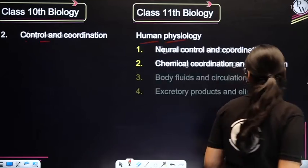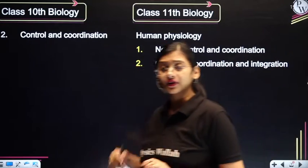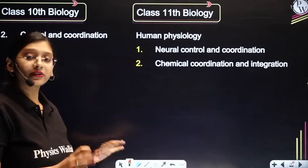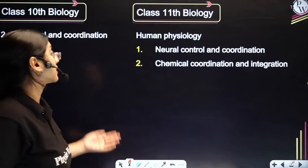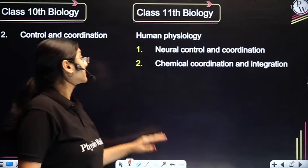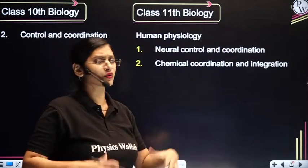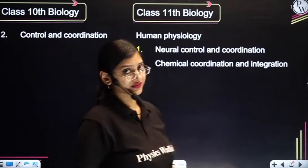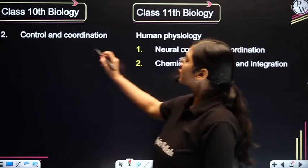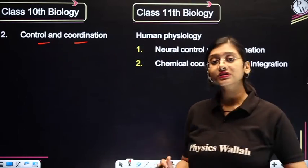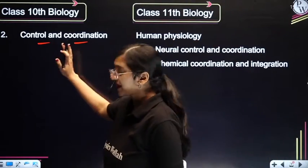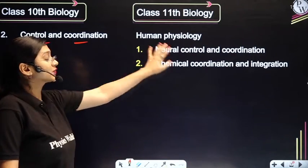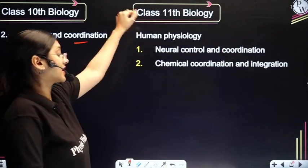Moving to the next chapter of class 10 — Control and Coordination. This connects with two more important chapters in 11th standard Human Physiology: Neural Control and Coordination, which is about the nervous system, and Chemical Coordination and Integration, which is about hormones. You will be studying both of these topics in Control and Coordination. It is a connecting chapter.